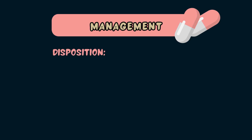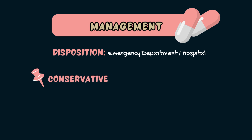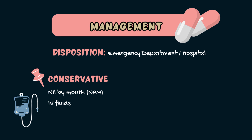Treatment of acute cholecystitis depends on severity, but in most cases management will include admitting the patient to hospital. Conservative management includes keeping the patient nil by mouth so that their gallbladder is no longer stimulated, placing them on intravenous fluids, and giving them intravenous antibiotics, which are usually broad spectrum as per local guidelines. It's also important to give the patient analgesia to help manage their pain.